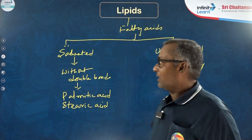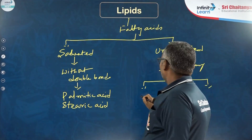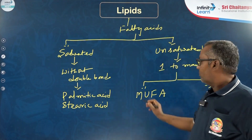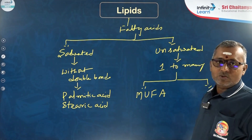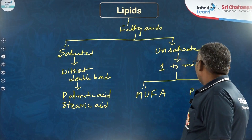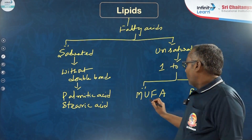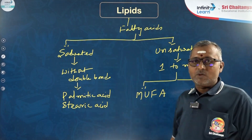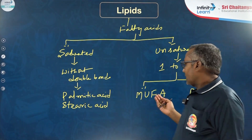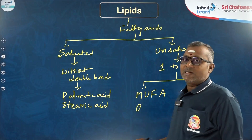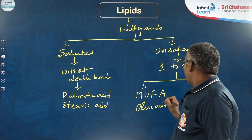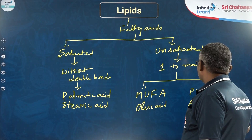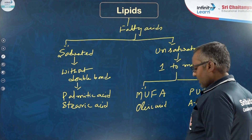Unsaturated fatty acids are again two kinds: MUFA, monounsaturated fatty acids, and PUFA, polyunsaturated fatty acids. Monounsaturated fatty acids have one double bond; polyunsaturated fatty acids have two to many double bonds. A best example for MUFA is oleic acid, and for PUFA is arachidonic acid.